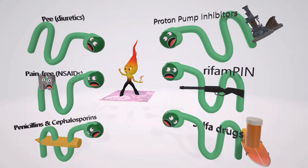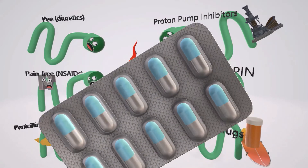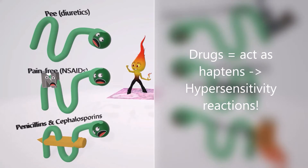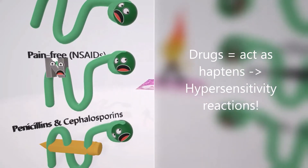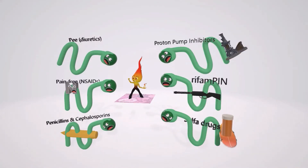Acute interstitial nephritis occurs after administration of drugs that act as haptens, inducing hypersensitivity. That's why we have all these hypersensitive nephrons — they're all crying because they're hypersensitive. This helps us remember that acute interstitial nephritis is due to a hypersensitivity type reaction.